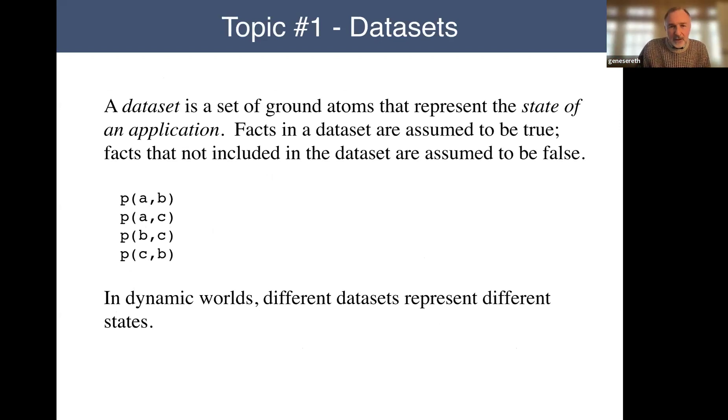So dataset, as you might imagine from the name, is simply a set of ground atoms that kind of describe the state of an application area. And the facts in the dataset are assumed to be true, and something that's not in the dataset is assumed to be false. Simple example here with a few object constants and single relation constant p. In dynamic worlds, these datasets actually represent states of the world, or they may represent alternative views of the world in purely static applications. All right, so that's a basic dataset is to make people feel comfortable with that as a database, except as we treat it as simply a set of sentences that are assumed to be true.